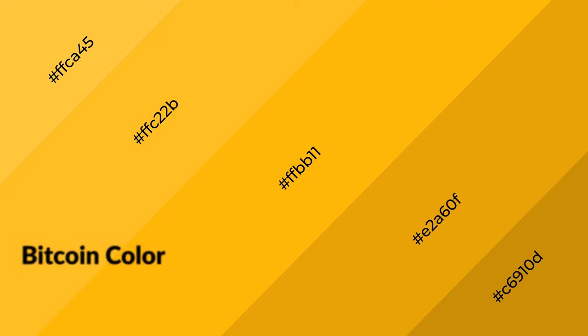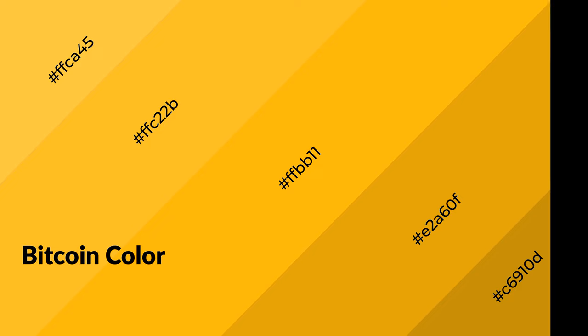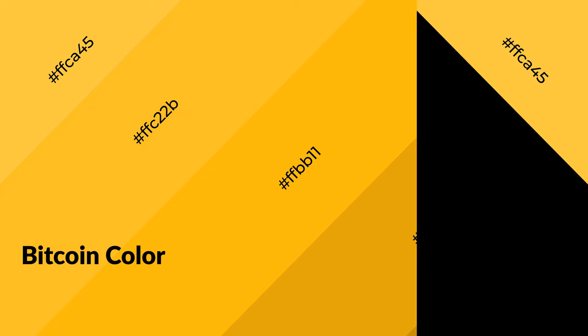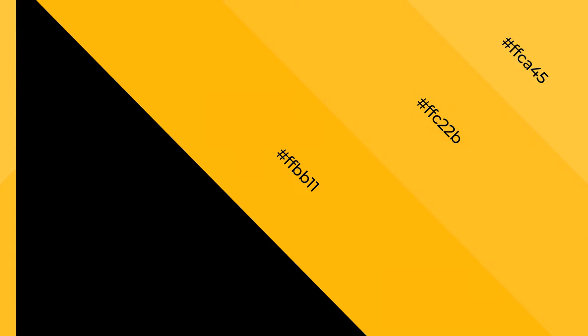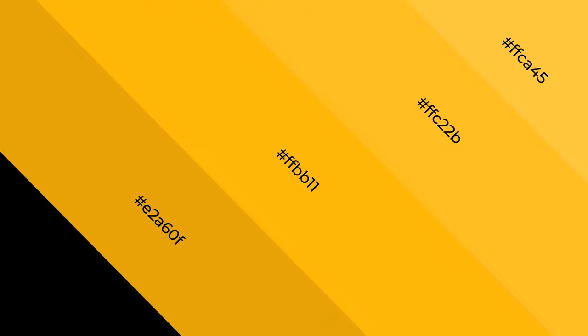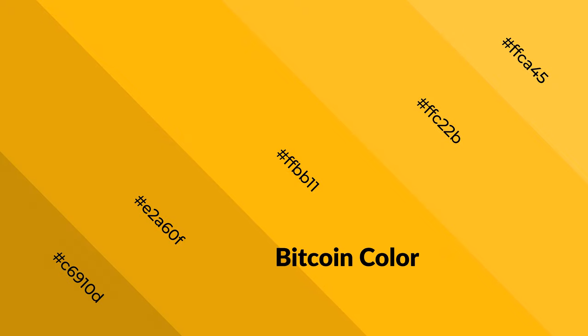Bitcoin is a warm color and it emits cozier and active emotion. Warm colors are symbols of warmth, fire, heat, and sunshine. It also evokes joy, passion, love, and even anger. You can see them used in restaurants and gyms.